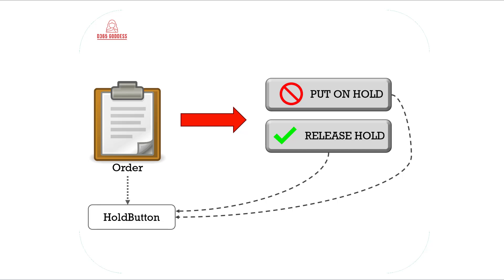I'm also going to show a notification when each of those buttons are clicked, and I only want the button to be visible when an order has been selected from the grid. Let's take a look and see how that works.